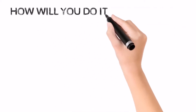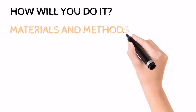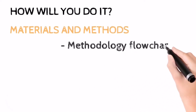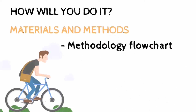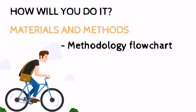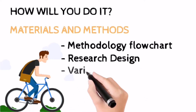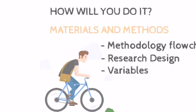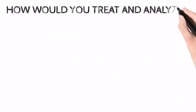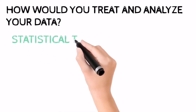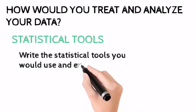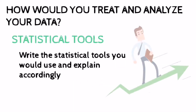How will you do it? This is very important — you also have to ask yourself whether you have the available resources. First, you need to prepare a methodology flowchart. Next would be a research design, and then of course you should know your variables. For how you would treat and analyze your data, the statistical tools should be able to answer this question. You should write the statistical tools that you would use and explain how you would use them.